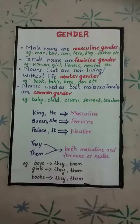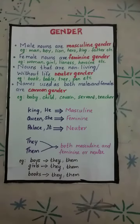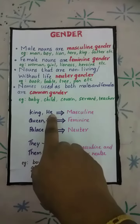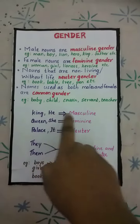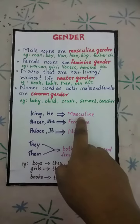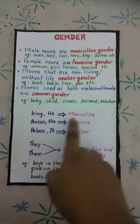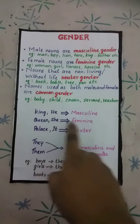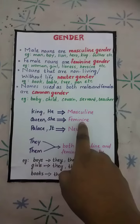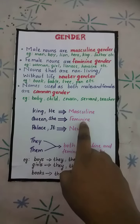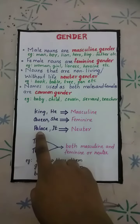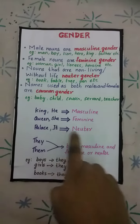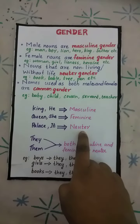Let's see again. King — he — masculine gender. Queen — she — feminine gender. Palace — it — neuter gender.